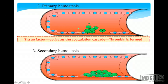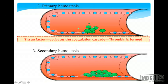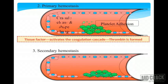Once platelets accumulate at the site of injury, they change their shape and keep secreting plenty of granules. The difference between primary and secondary hemostasis is that in secondary hemostasis there is formation of fibrin — the end product of the coagulation cascade. Fibrin acts like threads that entangle the mesh of platelets, stabilizing the plug. In primary hemostasis the platelet plug is loose, while in secondary hemostasis fibrin firmly binds the platelet plug.